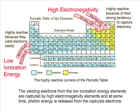The yielding electrons from the low ionization energy elements are captured by high electronegativity elements, and at the same time, photon energy is released from the captured electrons.